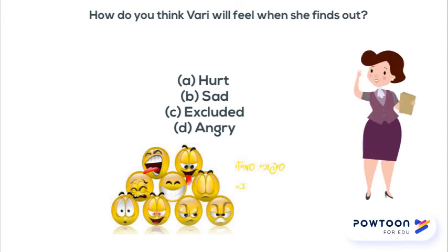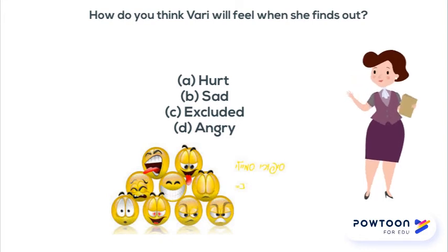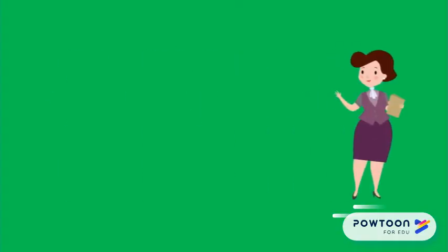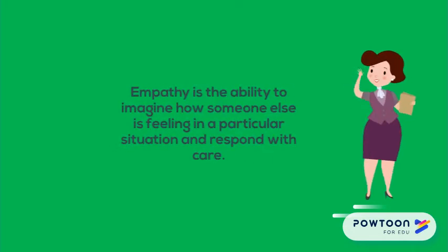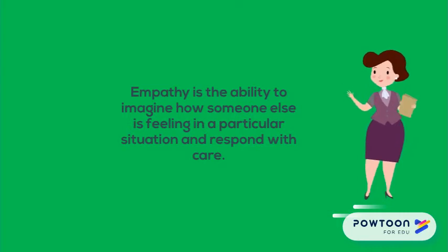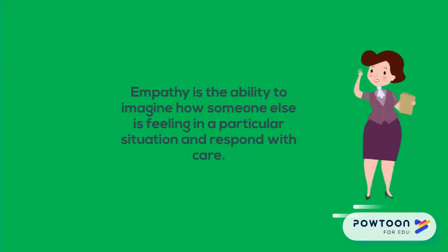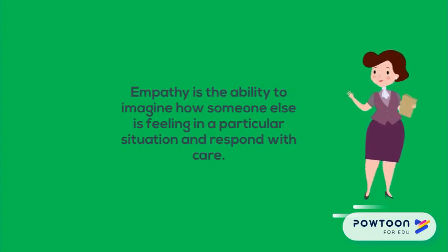How did you get to think about this situation? I bet you put yourself in Vari's position. When you see things from your friend's view, we call this empathy. Empathy is the ability to imagine how someone else is feeling in a particular situation and respond with care.